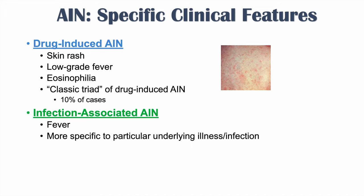Diagnosis of AIN involves urinalysis looking for sterile pyuria and white blood cell casts, and blood work checking for peripheral eosinophilia. However, a kidney biopsy is required for a definitive diagnosis. In practice, AIN is often diagnosed clinically through urinalysis and blood work, with kidney biopsy performed only in select cases.